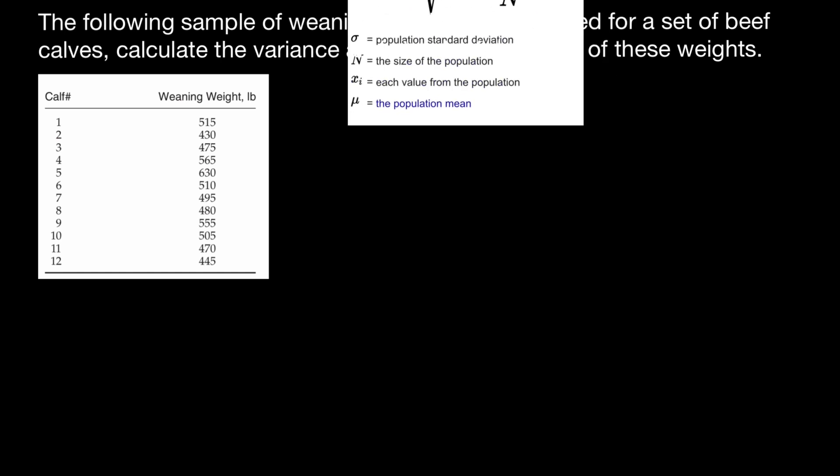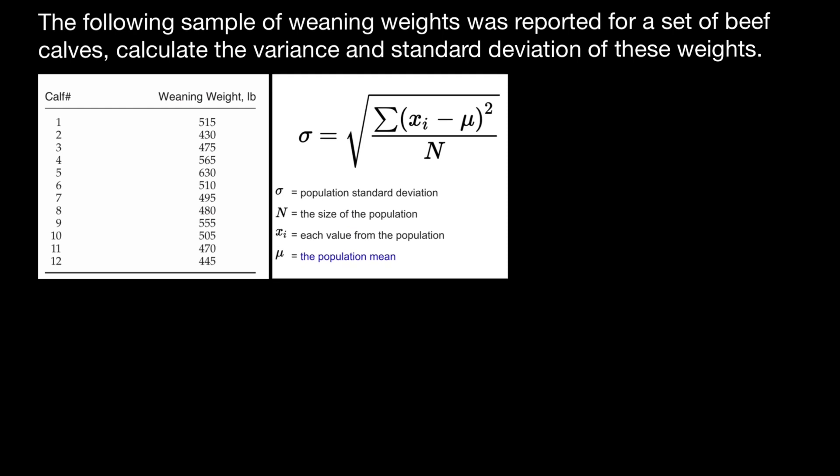In order to solve this problem, we need to use this formula. In this formula, we see mu, which stands for the population mean. That means we have to find this population mean first. How do we find it? We add the weaning weight of 12 calves and divide by the number of animals, so divide by 12.